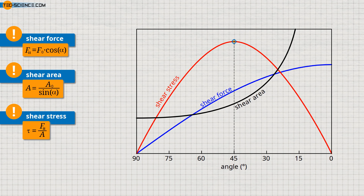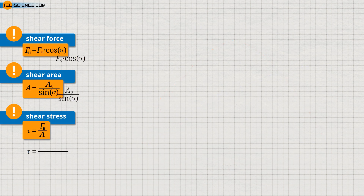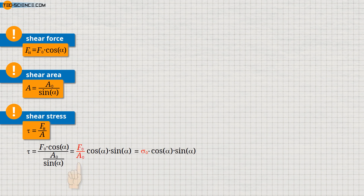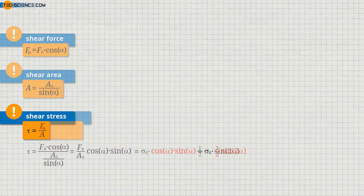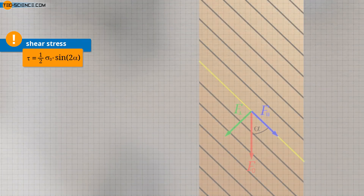We will also show this mathematically. We express the shear stress using the derived formula for the shear force and the area, obtaining the formula for the shear stress. In this equation, the quotient of force F0 and cross-sectional area A0 corresponds to the externally applied normal stress sigma_0. The shear stress acting inside the material can thus be determined from sigma_0 and the angle alpha. Furthermore, the product of cosine alpha and sine alpha can be replaced by one half times sine 2 alpha. Thus, for the effective shear stress tau in a slip plane oriented at angle alpha to the tensile axis, the given equation is valid.